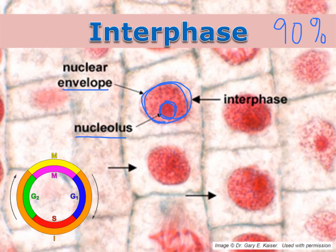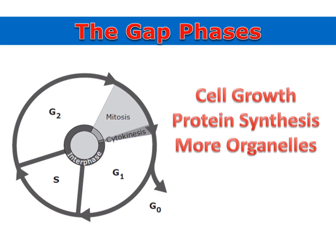Interphase itself can be broken up into three smaller stages: G1, S, and G2. The G1 and G2 portions of interphase are called the gap phases. It's during these gap phases that the cell grows and makes proteins. It also makes more copies of its organelles to meet its growing needs.